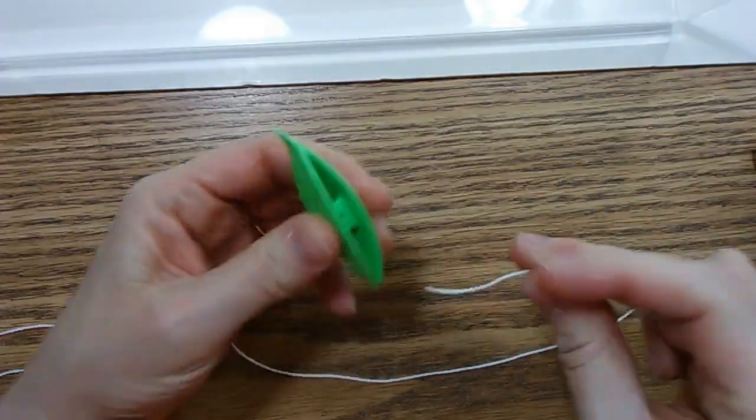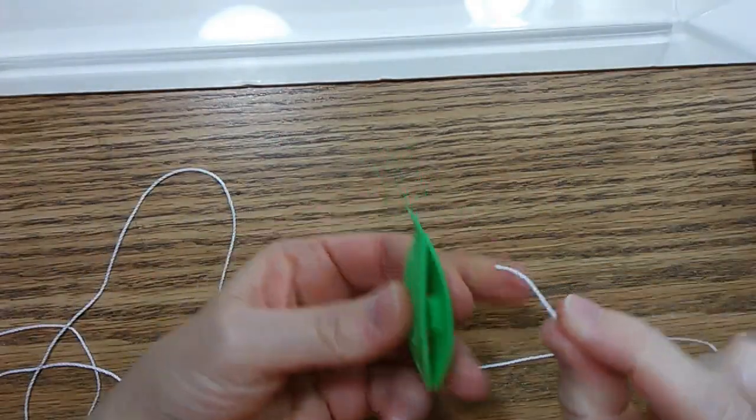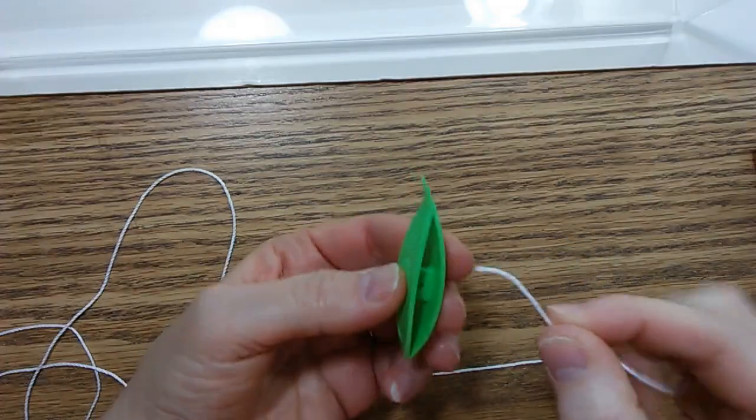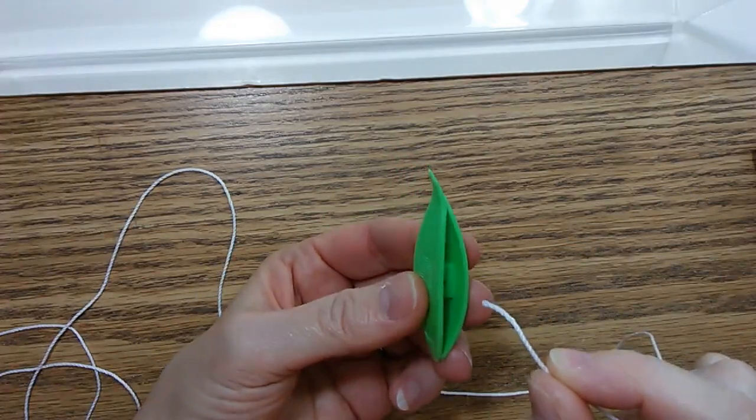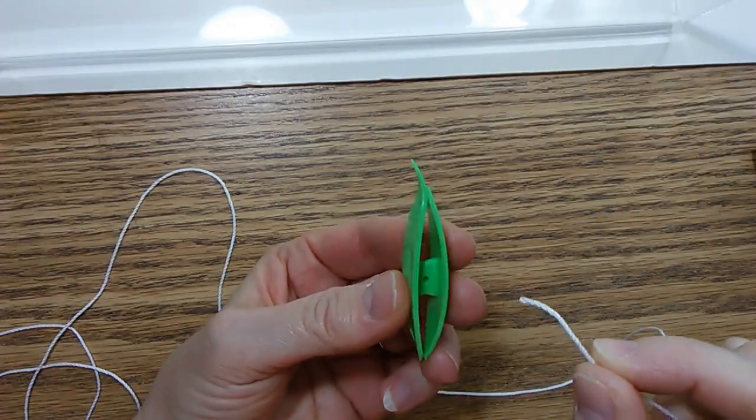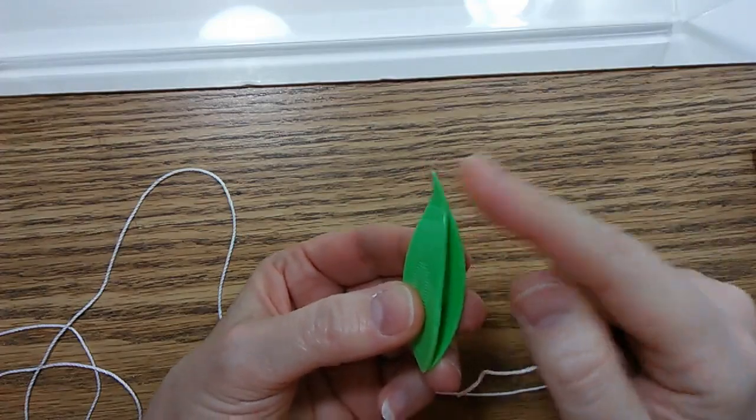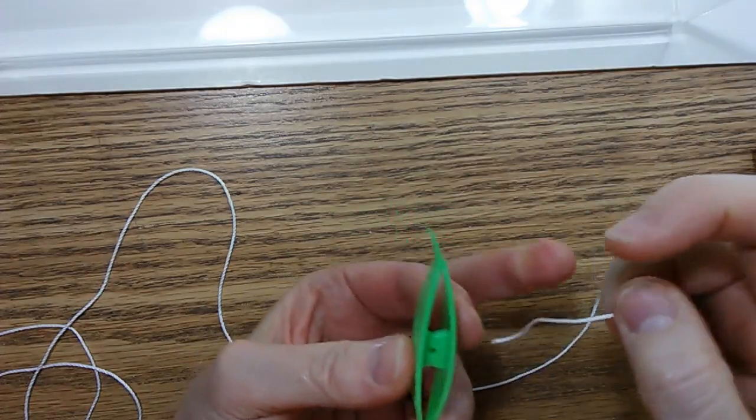So I thought I would show a little video today on how I wind my preferred plastic shuttles for tatting. You can see the plastic shuttle has a point and you hold it with the point pointing left.